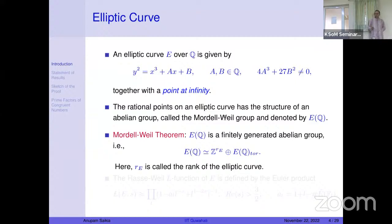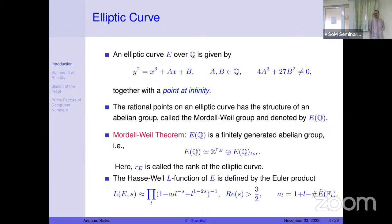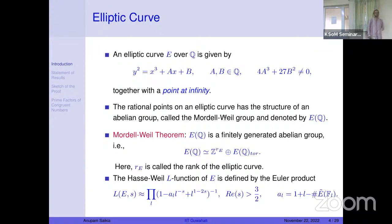We also have the L-function associated with the elliptic curve, defined by the Euler product taken over almost all primes — excluding the primes of bad reduction. By definition it converges for the real part of s greater than 3/2, but because of the modularity theorem (the Shimura-Taniyama conjecture) such an L-function can be associated to a modular form, giving us analytic continuation. The BSD conjecture says something about the value of L at s = 1.